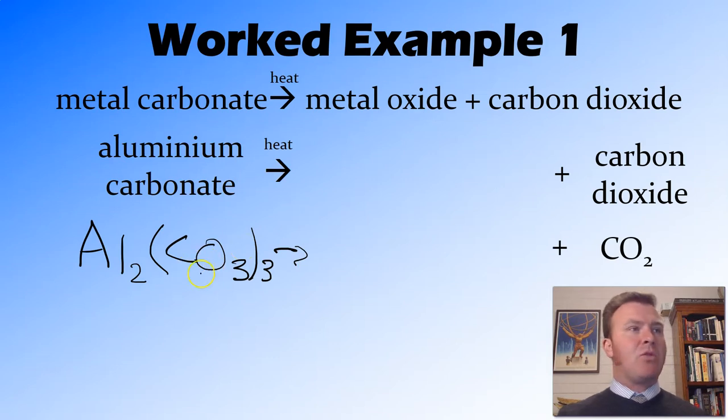In this reaction, what's happening is this carbonate ion is being broken up, and we get one of the carbons and two of the oxygens that come over here to form the carbon dioxide. So what we're going to be left with is the aluminum and that leftover oxygen. So we end up with our aluminum oxide.